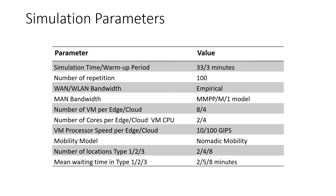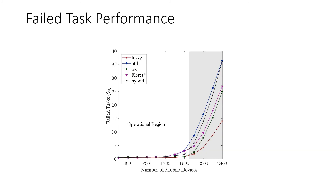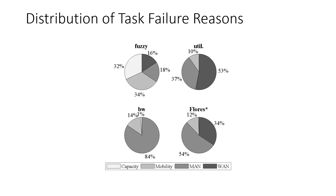The average unsuccessful task ratio is one of the most crucial performance criteria in computer network design. The average failed task percentage is shown in this figure. As you can see, our fuzzy-based solution provides the best performance. The reason behind this result will be clearer with the pie charts given in the following slide, which show the distribution of task failure reasons.